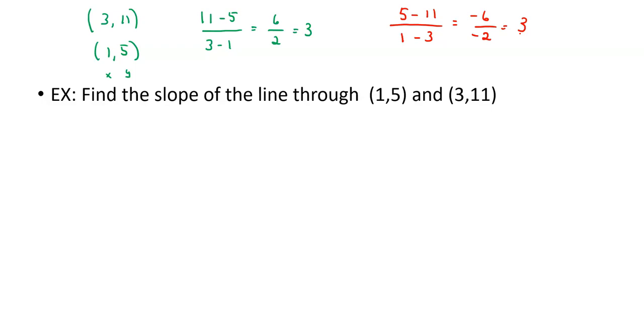The one thing I can't do is I can't switch midway. So I can't do 11 minus 5 and then decide to do 1 minus 3, because then I'll end up with the line going the wrong direction.